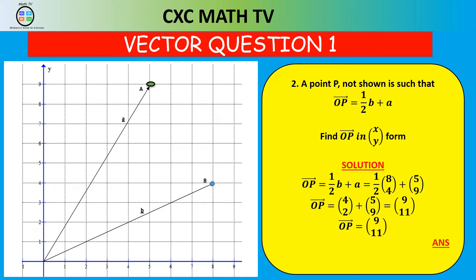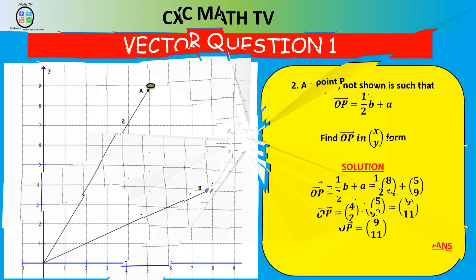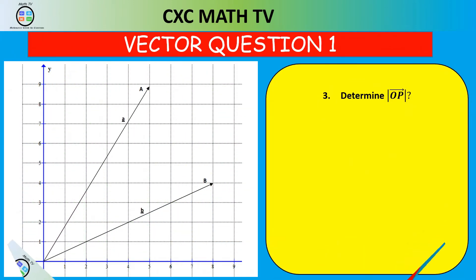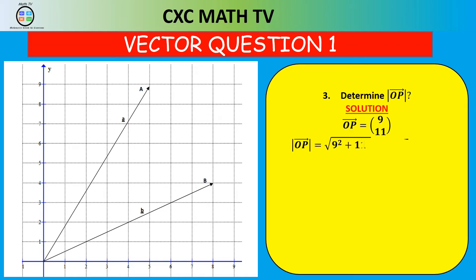Part three: determine the magnitude of vector OP. The magnitude is √(x² + y²) = √(9² + 11²) = √(81 + 121) = √202 = 14.2 units. So the magnitude of vector OP is 14.2 units.